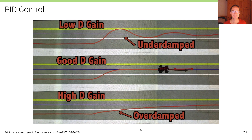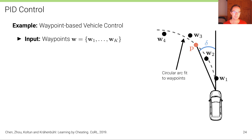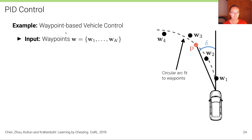To conclude this unit, here is one more example of a PID controller used in practice — one our research group also uses — on agents driving in the CARLA simulator. This is from a paper called 'Learning by Cheating' from CoRL 2019, where a PID controller is used to control a vehicle based on waypoints output by a driving policy. An image is fed to a neural network, and the neural network outputs waypoints in bird's-eye view — let's call them W1 to WK — illustrated here with four waypoints as the output of the perception stack.